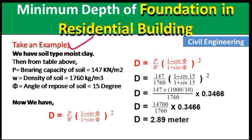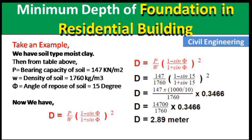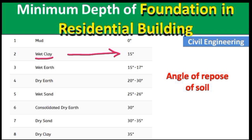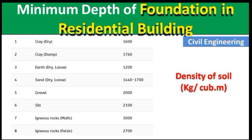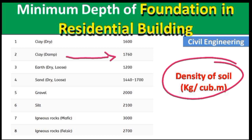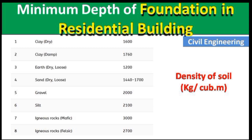Let us take an example. Suppose we have moist clay. From the lab test we obtained: bearing capacity of soil p = 147 kN/m², density of soil w = 1760 kg/m³, and angle of repose θ = 15°. From the table, the angle of repose for wet clay is 15°, and the load-bearing capacity for moist clay is 147 kN/m².